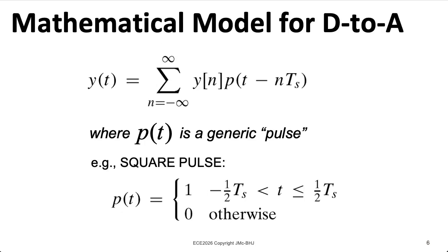Let's form a mathematical model for the digital-to-analog conversion process that consists of taking some generic pulse, p(t). And what we're going to do is we're going to take that pulse and shift it to land at each of the sample points.